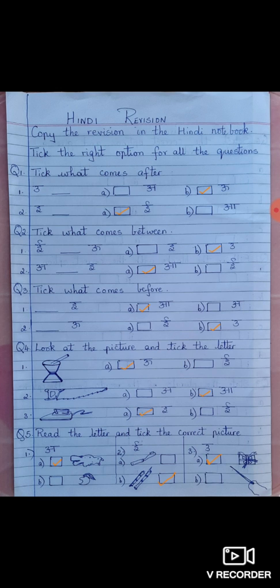E, dash. Option A, E. Option B, A. So you will tick what comes after E is E.